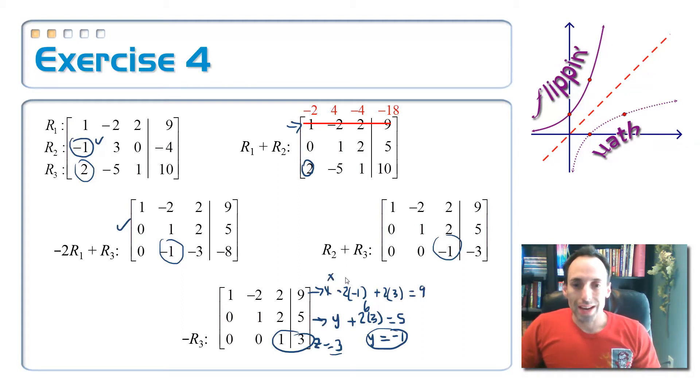Okay? So, this is x plus 2 plus 6 is equal to 9. Add those up. That's 8 subtracted over x is equal to 1. So, my final answer here is 1, negative 1, and 3.